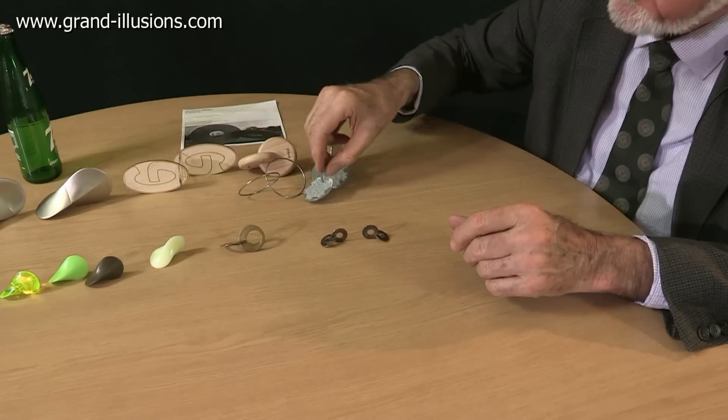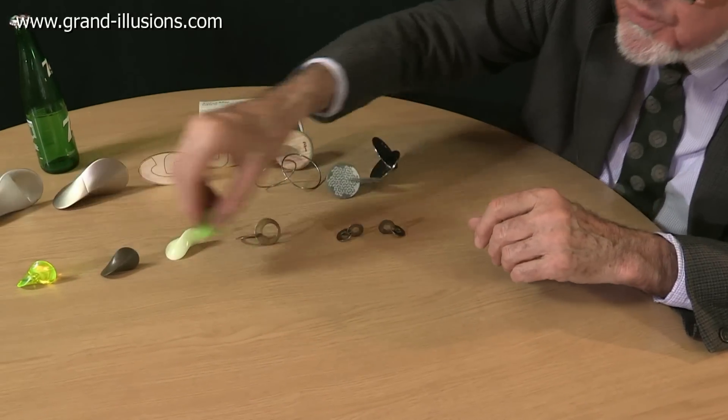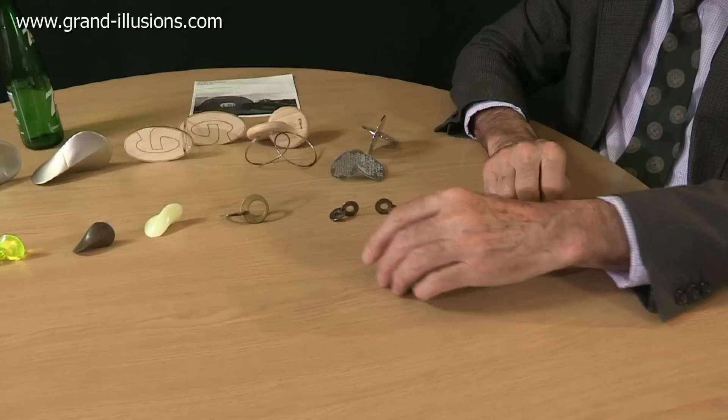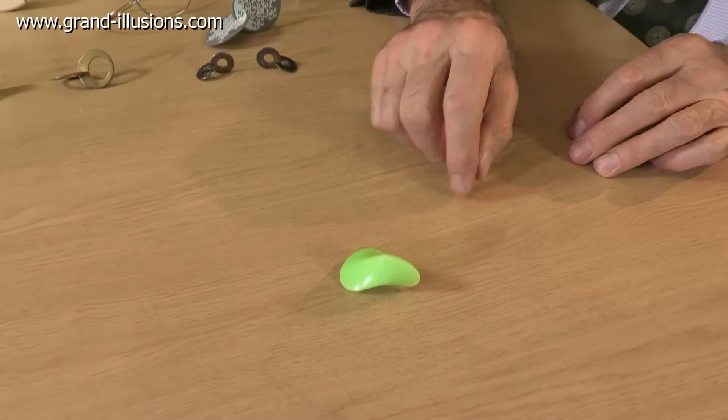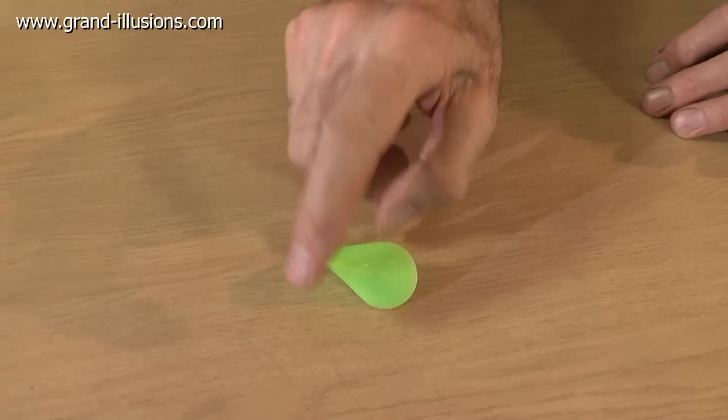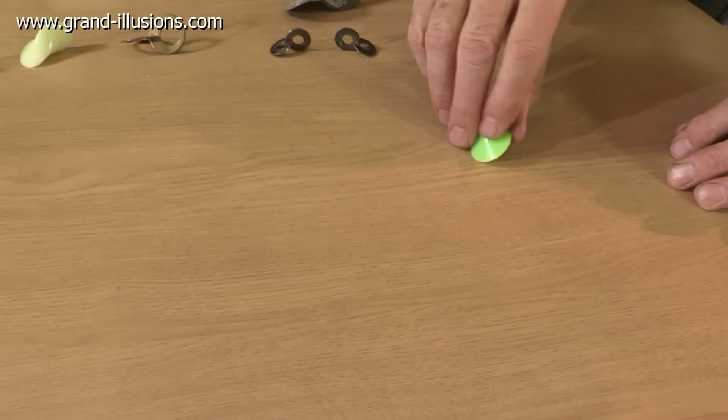His favorite one, which he made thousands of them, was this one here, where he filled in the distance between the rings and made a solid piece of plastic, and he made thousands and thousands of these, and these wobbled beautifully. Let's go across the table like that.